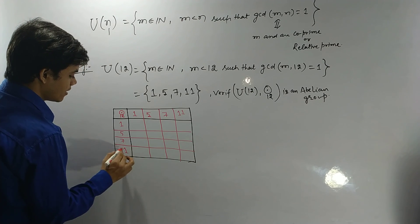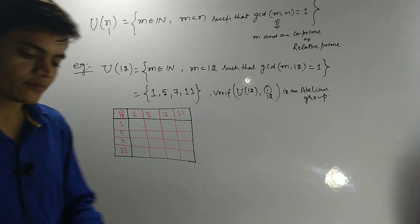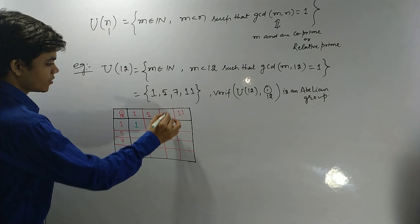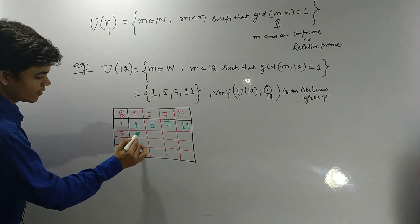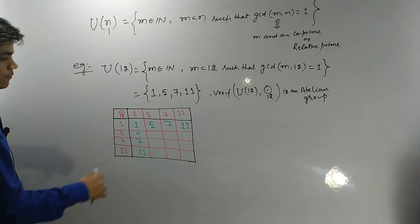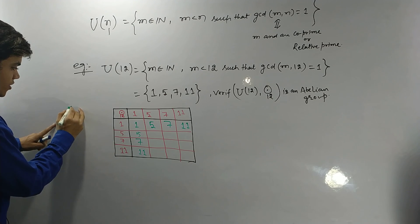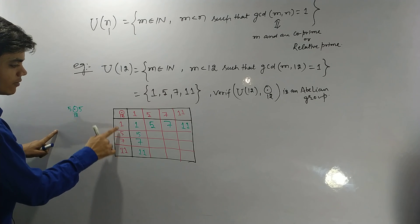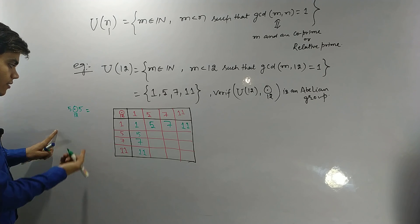Now let's fill in the table. 1×1=1, 1×5=5, 1×7=7, 1×11=11. 5×1=5, 7×1=7, 11×1=11. For 5×5: that is 25 modulo 12. Let me work this out — 5 multiplication modulo 12 with 5 is 25, and 25 mod 12 gives remainder 1.